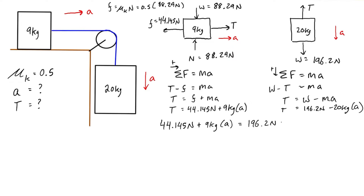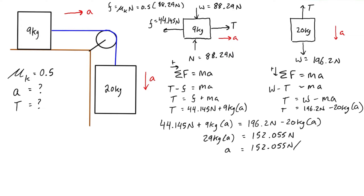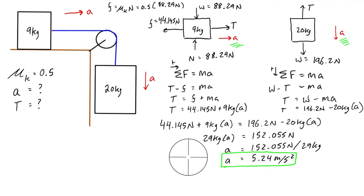We now have two expressions for T, so let's set them equal to each other and group like terms. We get 29 kilograms times a equals 152.055 newtons. Isolating for a, we divide 152.055 newtons by 29 kilograms and find that acceleration equals 5.24 meters per second squared. That's the magnitude, with direction indicated on each free body diagram.